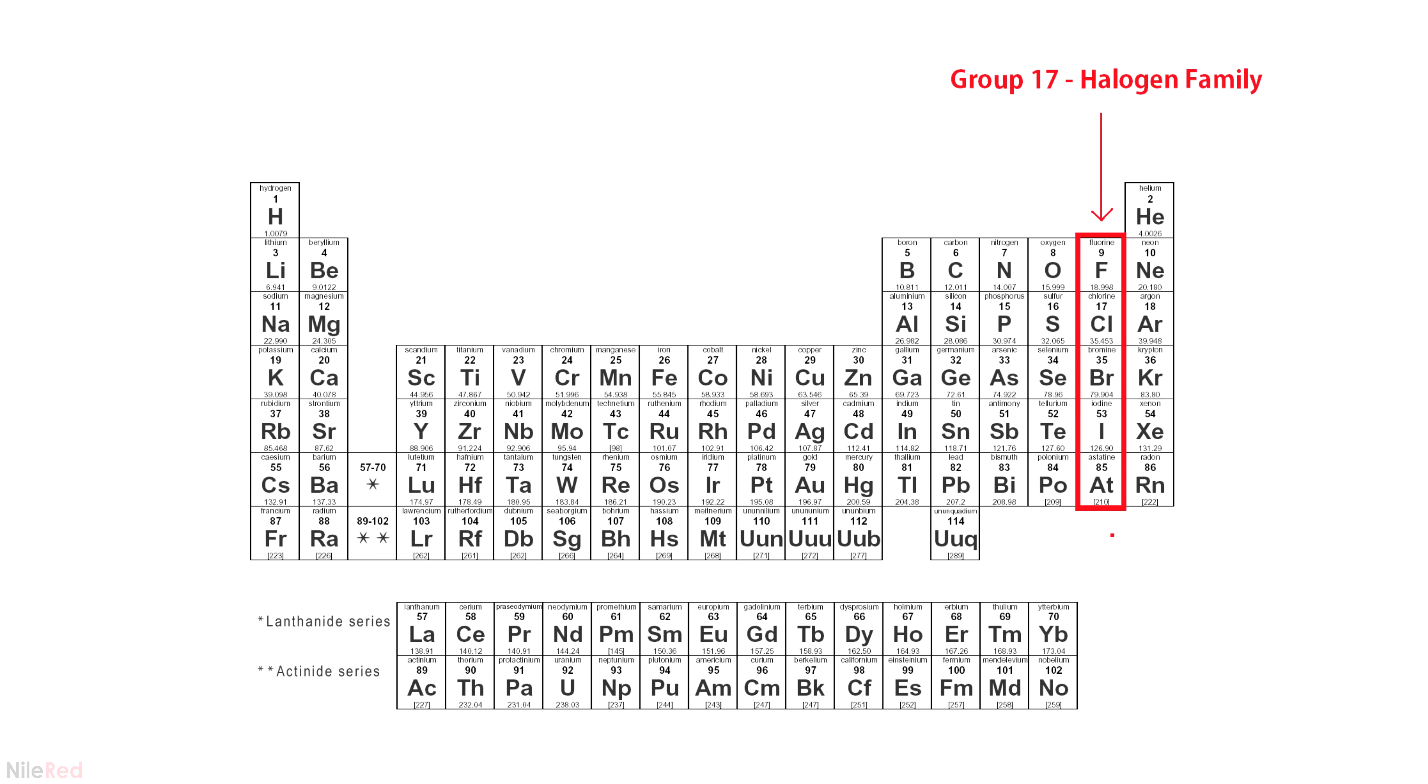If we take a look at the periodic table we can see that bromine lies in group 17 which is also known as the halogen family. If we look at the other members of this family we can find things like chlorine and fluorine or iodine and all of these chemical elements share some similar properties.